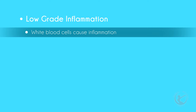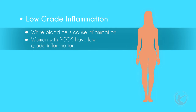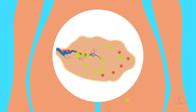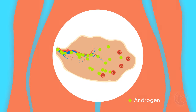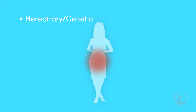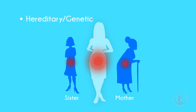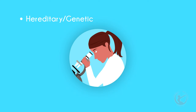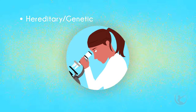Low-grade inflammation: your body's white cells produce substances to fight infection in a response called inflammation. Research has shown that women with PCOS have low-grade inflammation, and that this type of low-grade inflammation stimulates polycystic ovaries to produce androgens. Hereditary or genetic: if your mother or your sister has PCOS, you might have a greater chance of having it too. Researchers are also looking into the possibility that certain genes are linked to PCOS.